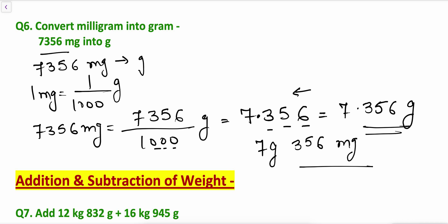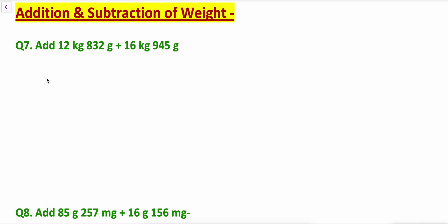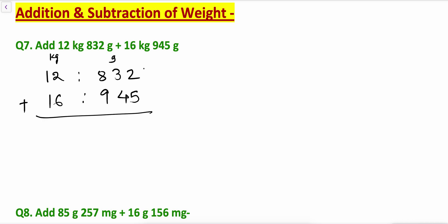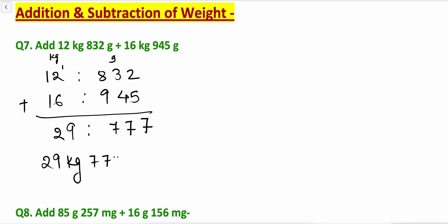Now we will see addition and subtraction of weight. Add 12 kg 832 grams and 16 kg 945 grams. Write kg in one column and grams in another. Always start addition from the right-hand side. 2 plus 5 is 7, 3 plus 4 is 7, 8 plus 9 is 17 — carry 1. Then 6 plus 2 is 8, plus 1 carry is 9, and 1 plus 1 is 2. The answer is 29 kg 777 grams.